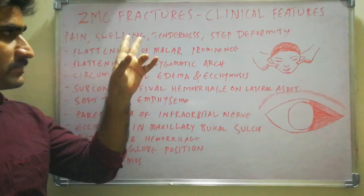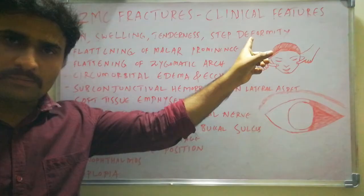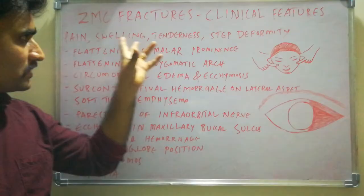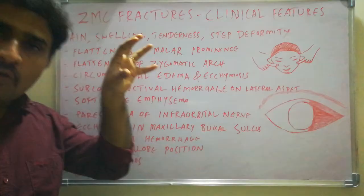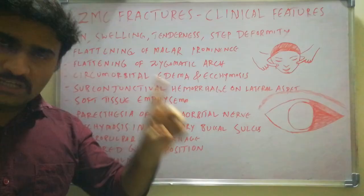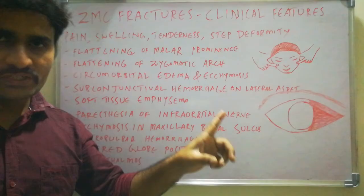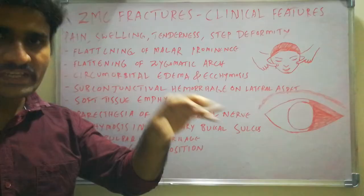In this video, we are going to discuss clinical features of ZMC fractures. The classic signs of any fracture — pain, swelling, tenderness, and step deformity (discontinuity in the bone) — will all be present. Pain and swelling over the zygomatic area, tenderness on palpation, and step deformity are seen at the frontozygomatic suture, infraorbital rim, or zygomaticomaxillary buttress, or in the arch region if the zygomatic arch is fractured.